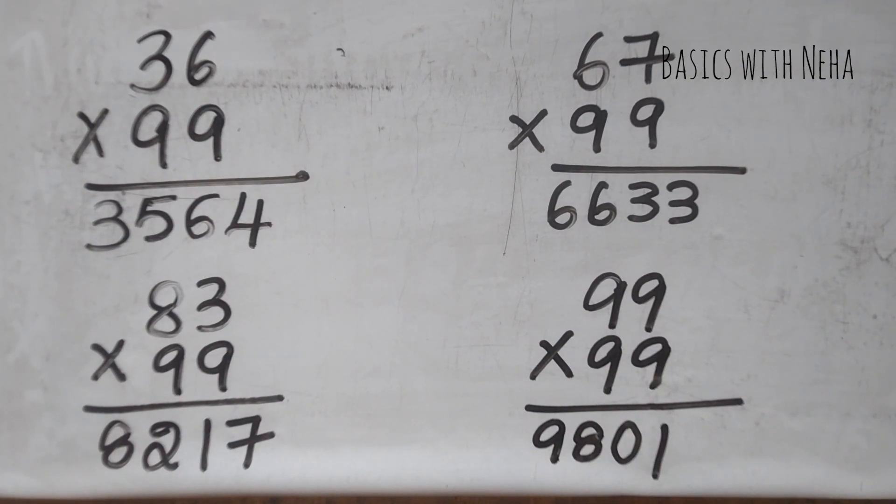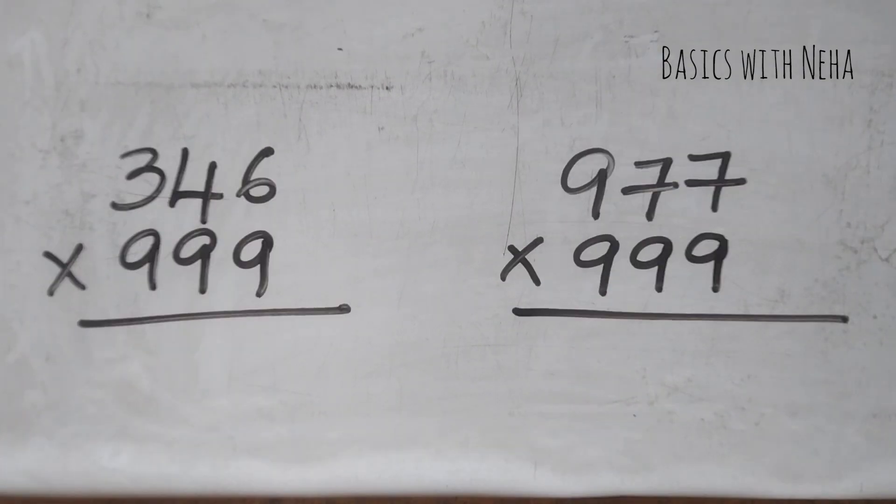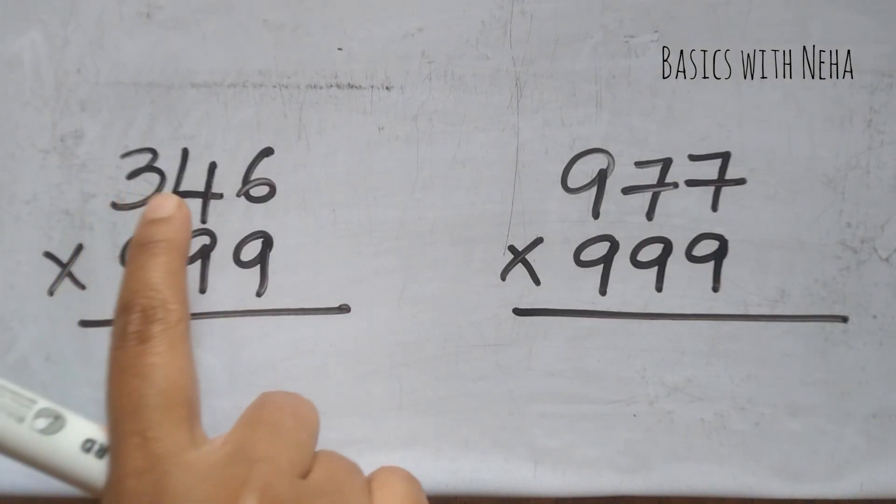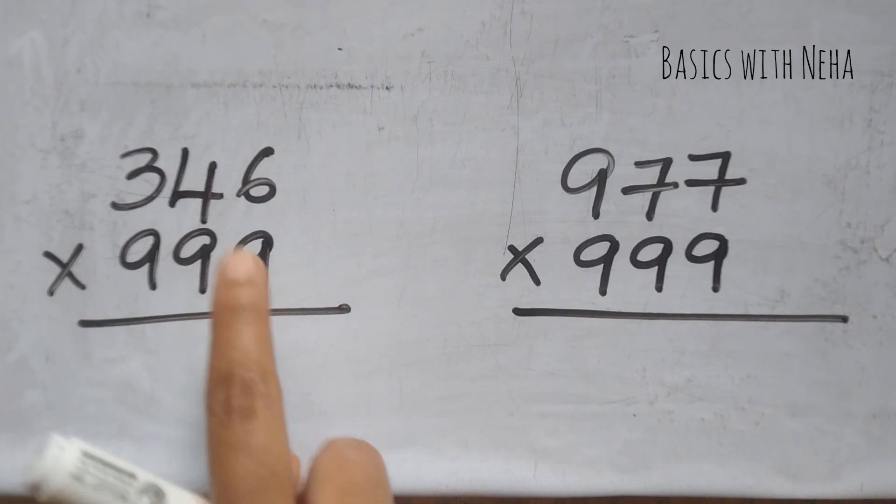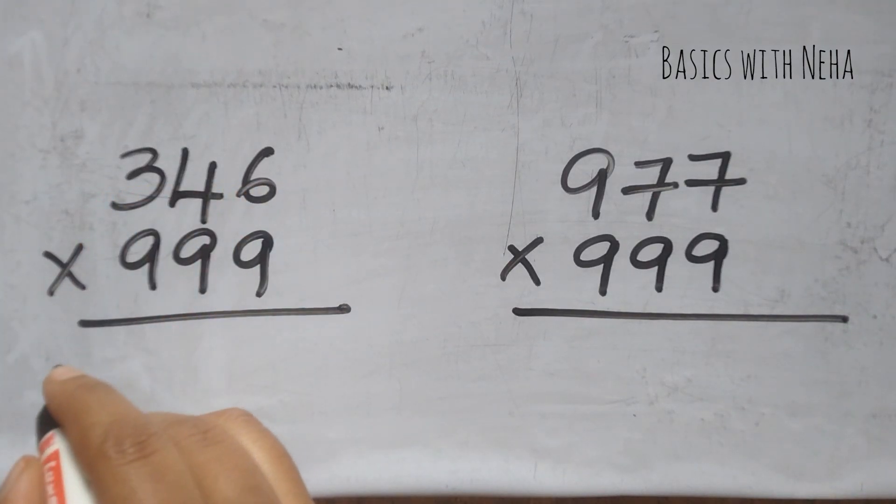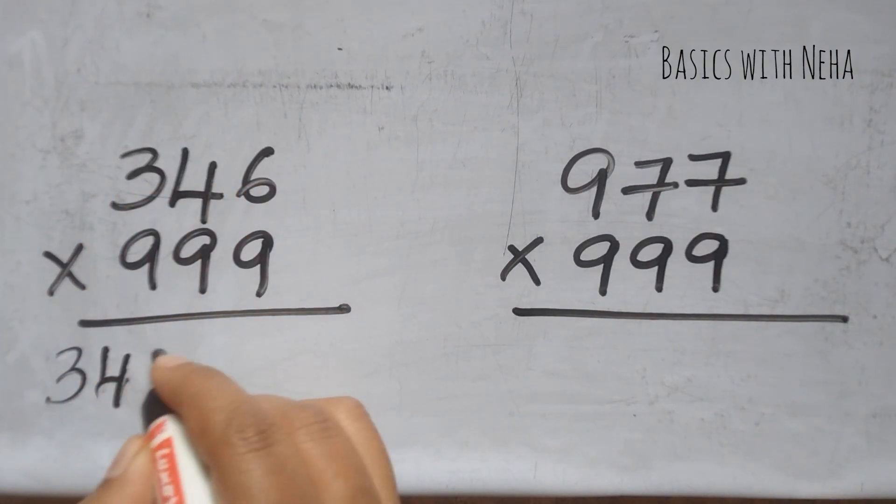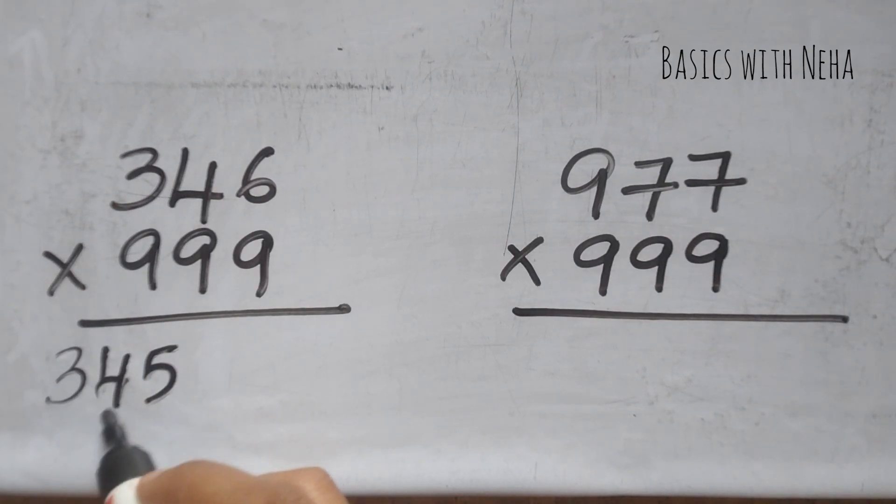So let's try with 3 digits into 999. The first question, 346 into 999. Decrease the number by one which will become 345 and subtract from 9 individually.